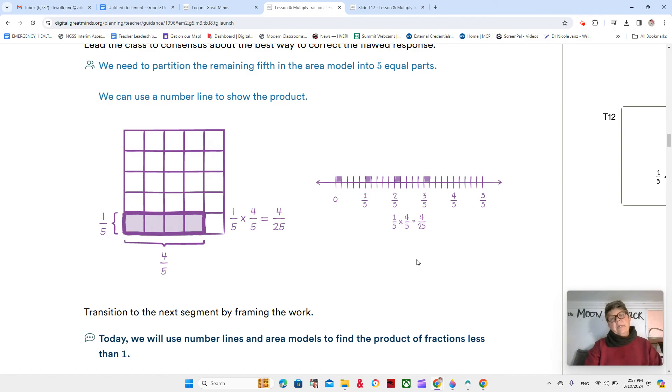And we can also do it by number line. So I wanted to show that since in the last lesson we didn't get to see too much of it. But 1/5th, right? And then we want to break it into 5ths. So this is 4/5ths. And we're taking 1/5th of each one.